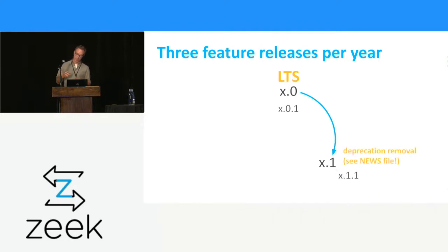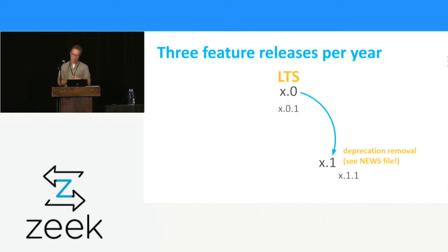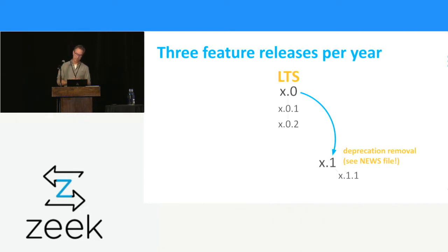The .1 release is also where we usually remove deprecations — we deprecate things across the preceding releases and this is usually the one where we pull material we no longer want in the distribution. There's a file in there that is very useful for tracking what changes happen release to release, so you might want to look at that particularly when you move to the .1 release, because it might be critical for your setting. When a new bug fix release comes out, we take those same bug fixes and also apply them to the LTS release branch, so there will also be a .0.2.